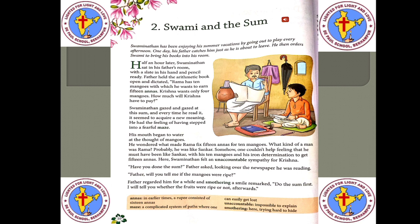Swaminathan gazed and gazed at the sum, and every time he read it, it seemed to acquire a new meaning. He had the feeling of having stepped into a fearful maze — a complicated system of paths where one can easily get lost. His mouth began to water at the thought of mangoes. He wondered what made Rama fix 15 anas for 10 mangoes, and what kind of man Rama was. He thought Rama must have been like his friend Shankar, with his 10 mangoes and his iron determination to get 15 anas. Swaminathan felt an unaccountable — impossible to explain — sympathy for Krishna.